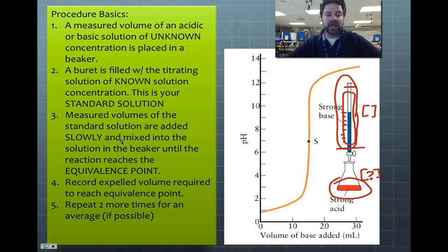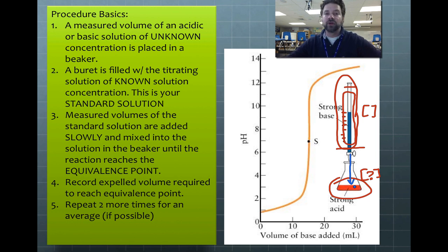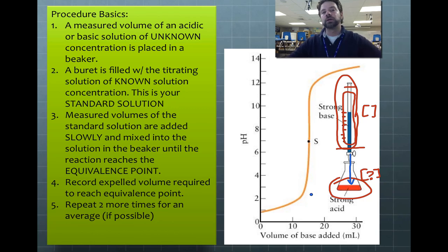Measured volumes of the standard solution are added slowly and mixed into the solution in the beaker until the reaction reaches the equivalence point. As you get closer to the equivalence point, the new indicator color holds for longer and longer — first a second, then two seconds, then three, but it keeps disappearing. That's your sign to slow down and go drop by drop, because you're approaching the point where it may hold for five seconds before fading — one more drop could reach the equivalence point.